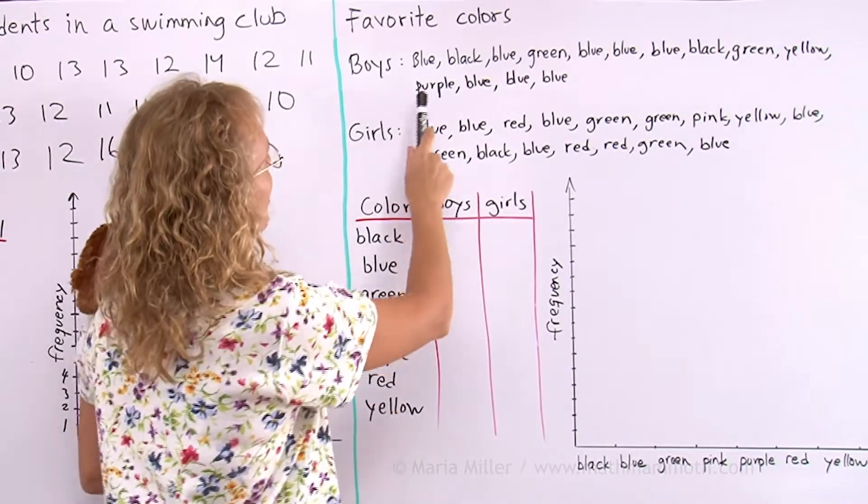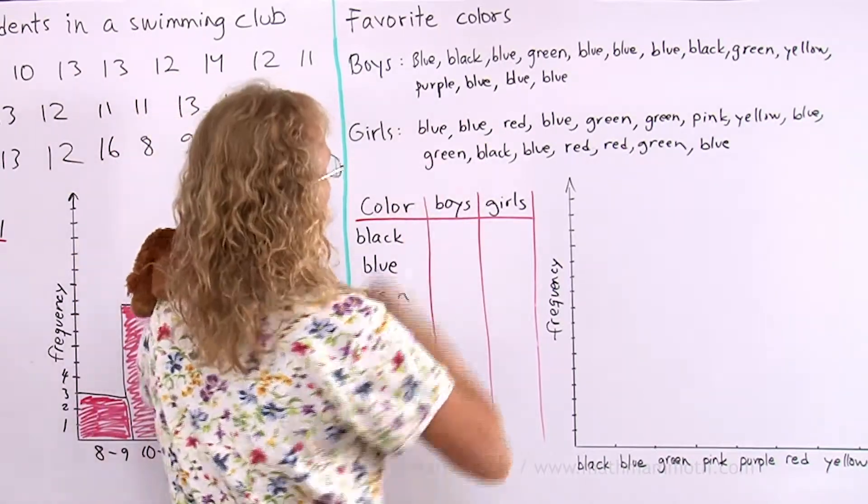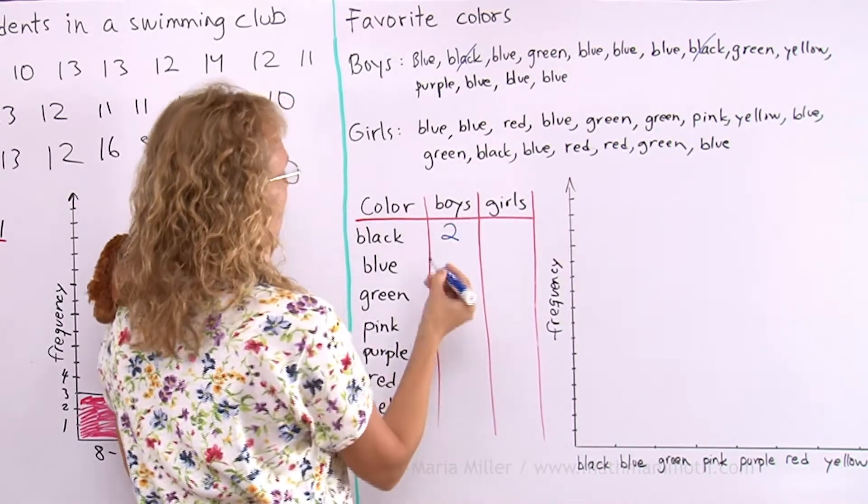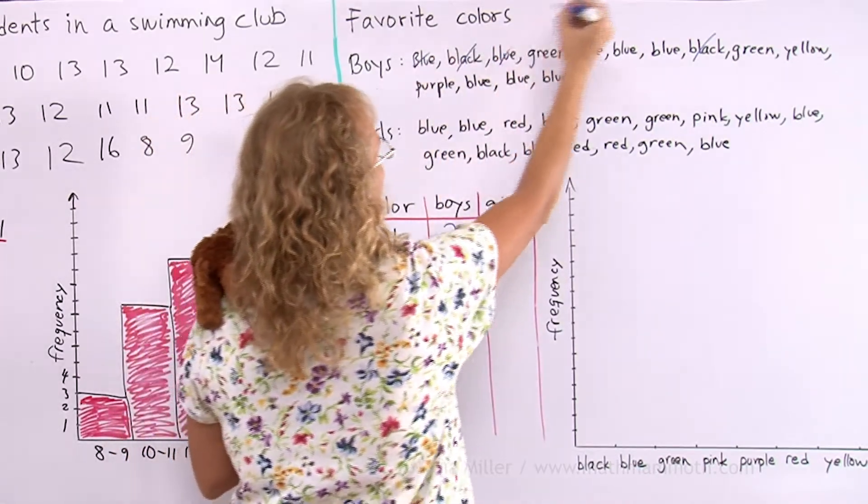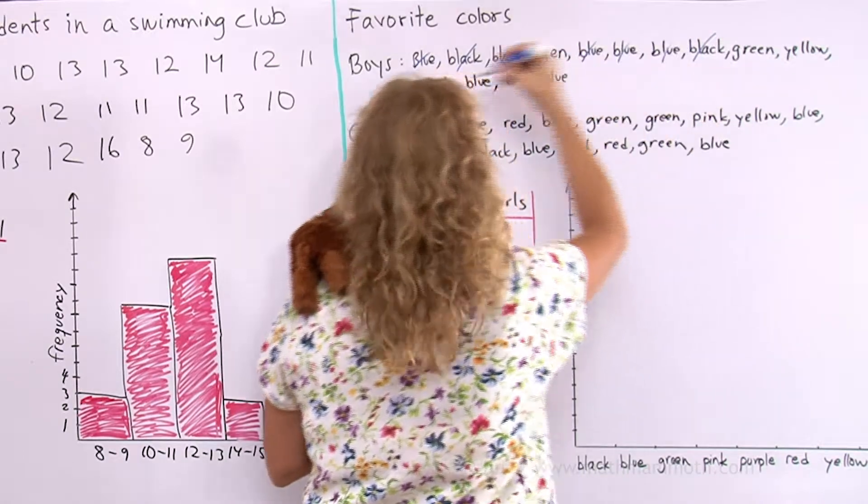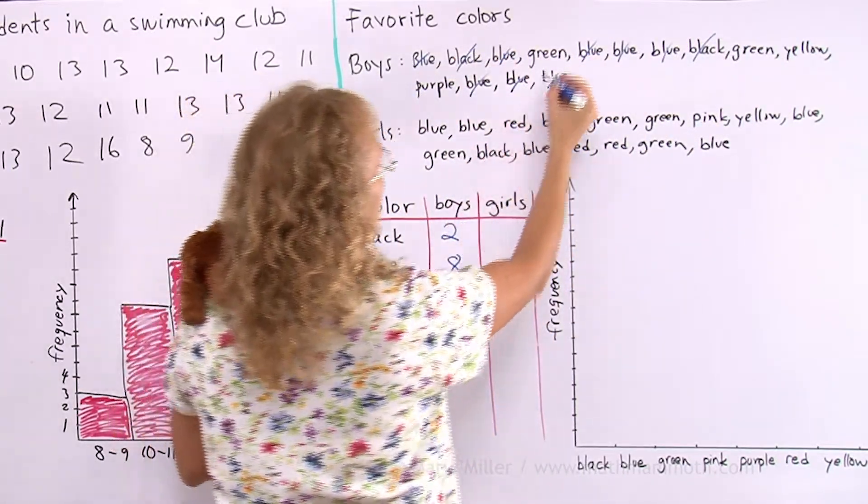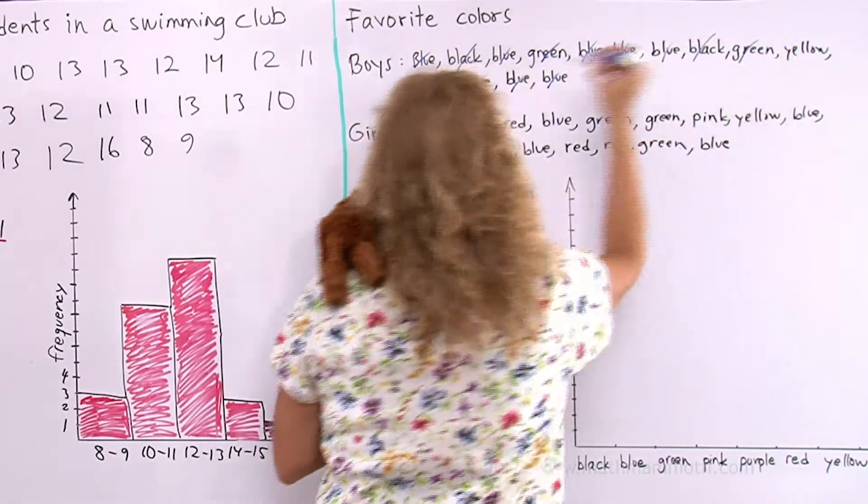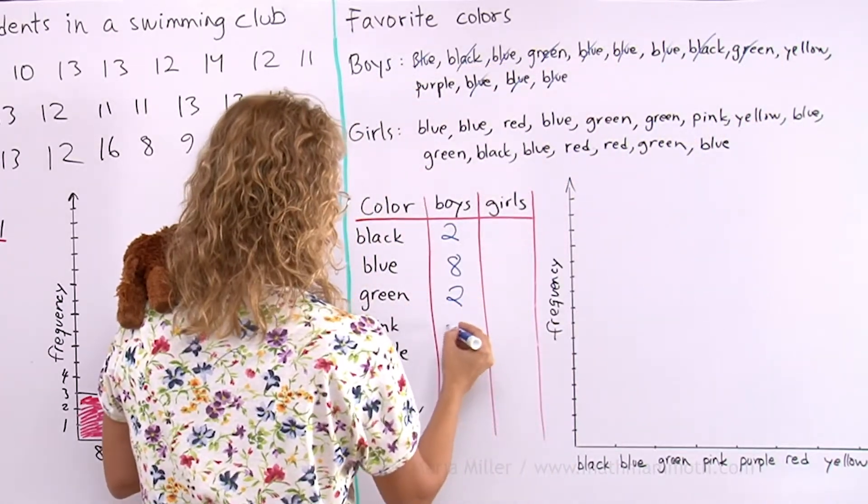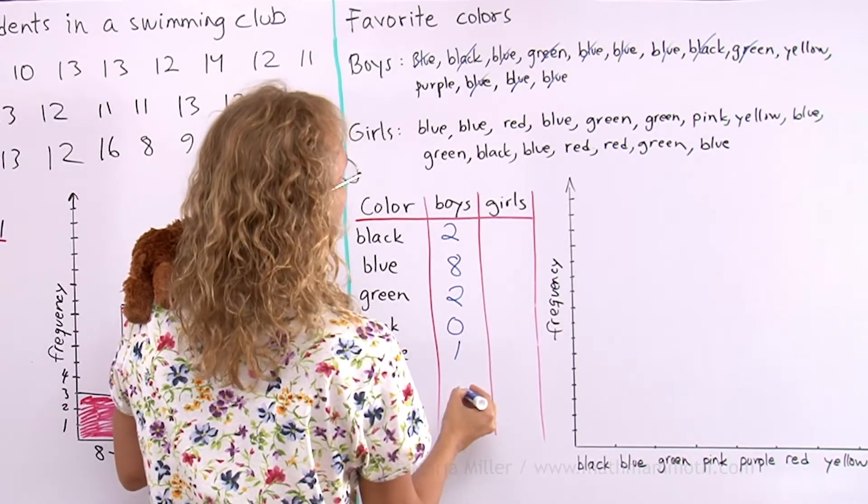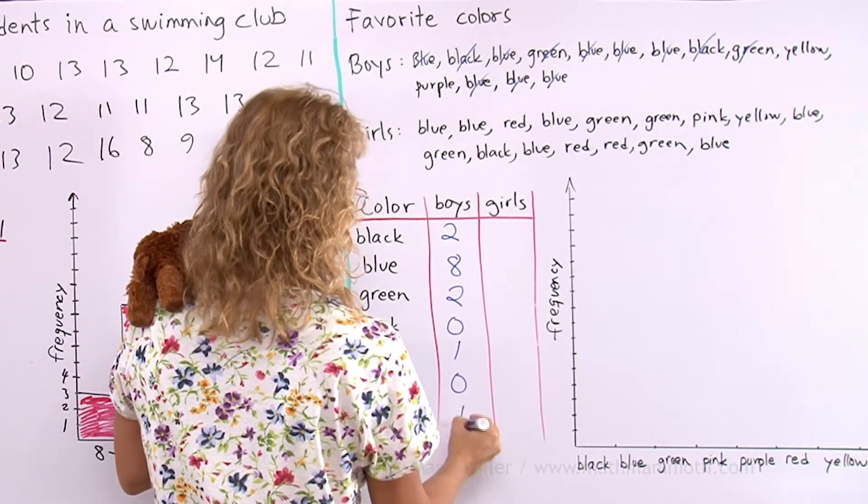Black, how many boys are there that like black? Two. Then blue, one, two, three, four, five, six, seven, eight. And green, one, two, pink, none, purple, one, red, none, and yellow, one.